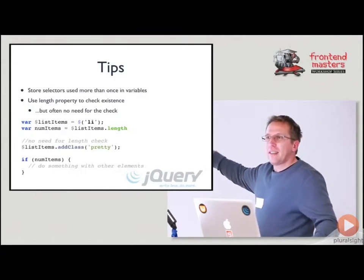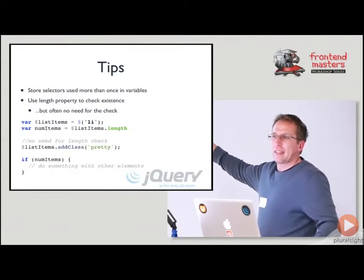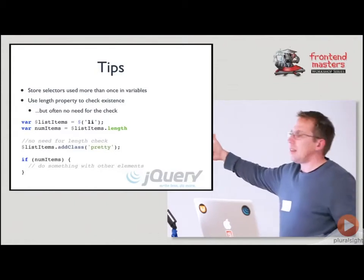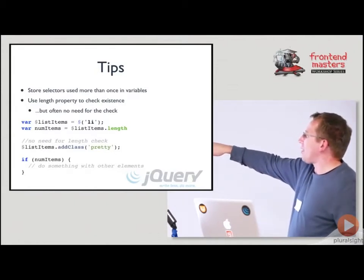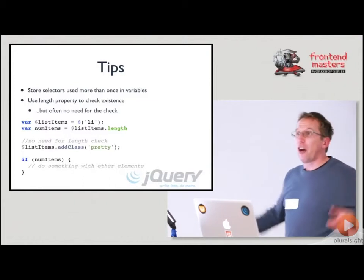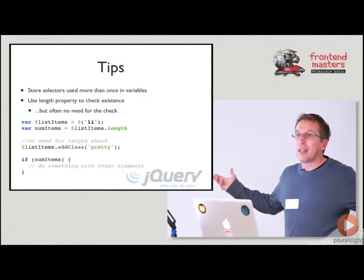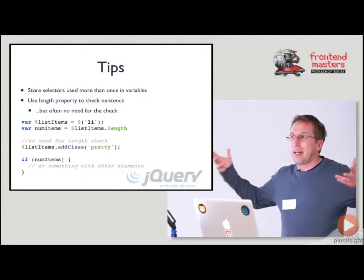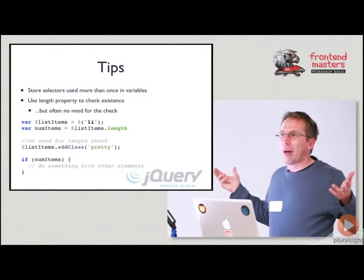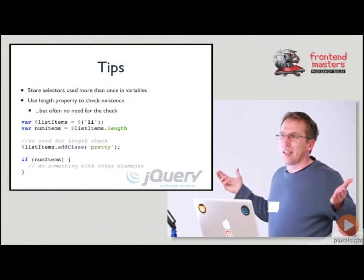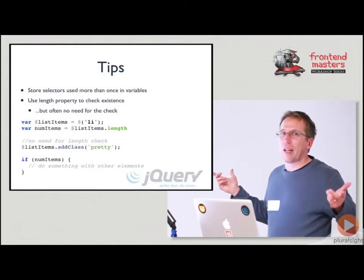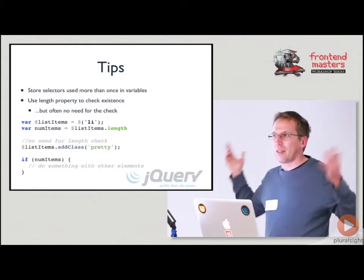Often there's no need to check for the existence of it. Sometimes you could just say `listItems.addClass('pretty')`. If there are no list items, it's going to be a collection of zero elements and it's not going to do anything. It's going to try to do something to zero elements, and it'll be done.